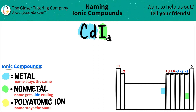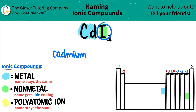We have all the elements accounted for, so now we can just start naming. The metal name will always, always stay the same — so cadmium will just stay cadmium. Now iodine, that's the non-metal, and that gets the -ide ending. So it would be iodine, but now it gets rid of the -ne and it becomes iodide.